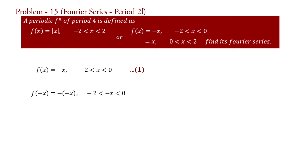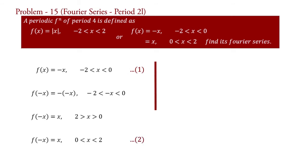Therefore f(−x) = x for 2 > x > 0. Inverting the order of the interval, f(−x) = x for 0 < x < 2 — say equation 2. The second part of the function is f(x) = x for 0 < x < 2, say equation 3.